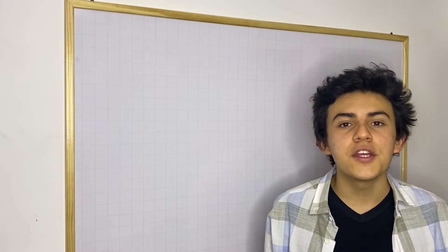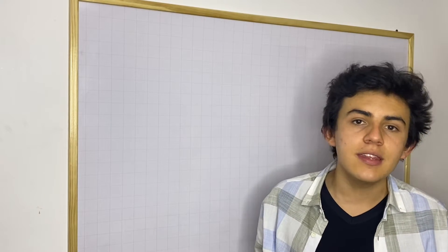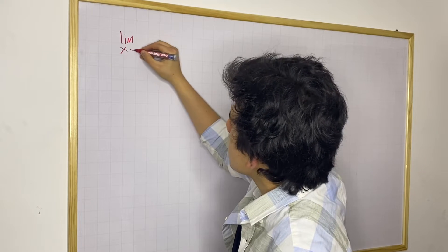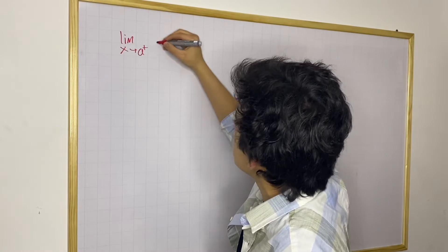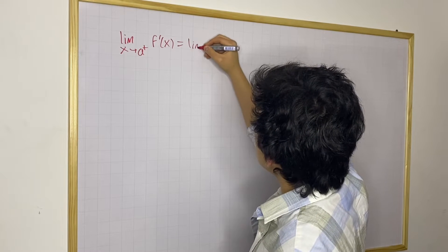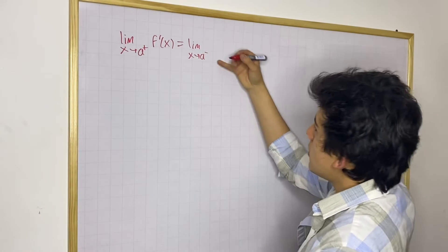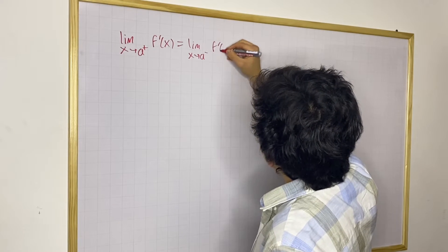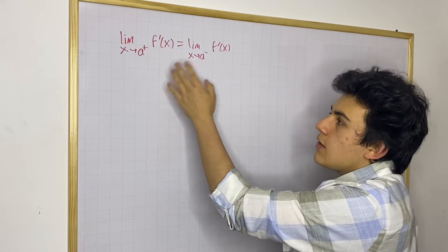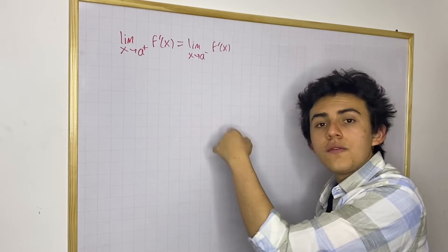Today we're going to discuss what a differentiable function means. In the last video we went over what the differentiability definition is. We know that it's simply saying the limit as x approaches any number a from the right side for the derivative of a function f should be equal to the limit as x approaches that same number from the left side — that is, from values smaller than a. If this condition is true, then we say that f of x is differentiable at x equals a. That is the definition of differentiability.